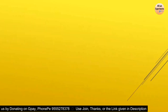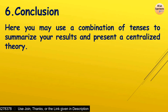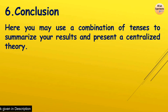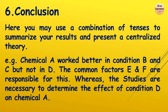Finally we come to the conclusion, where you may use a combination of tenses to summarize your results and present the centralized theory from your work. For example: 'Chemical A worked better in condition B and C, but not in D. The common factors E and F are responsible for this, whereas additional studies are necessary to determine the effect of condition D on chemical A.' Many people mix up the abstract and conclusion. In the abstract, what you have done is the main concern; in the conclusion, what you have observed out of the study is the main concern.